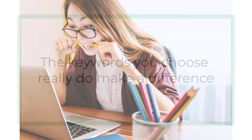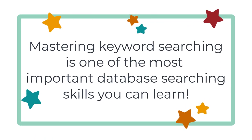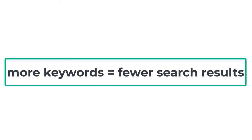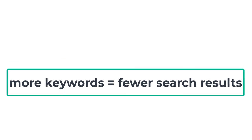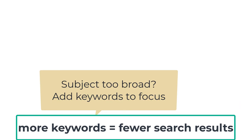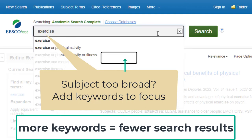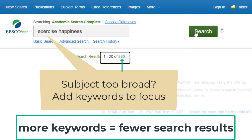That's both frustrating and not the best use of your time as a researcher. The keywords you choose really do make a difference, which is why mastering keyword searching is one of the most important database searching skills you can learn. As this last example showed, adding more keywords will reduce the number of results you get. If your subject is too broad, adding carefully selected keywords to focus it can be helpful. For example, a broad search for exercise brings back almost 124,000 results in Academic Search, so adding the additional keyword happiness provided helpful focus.